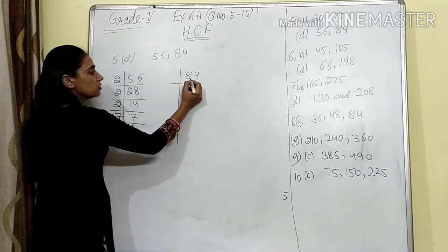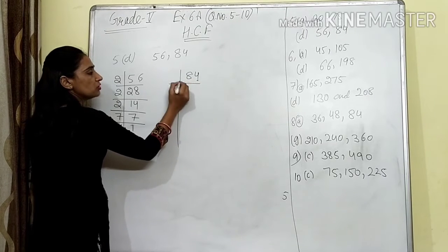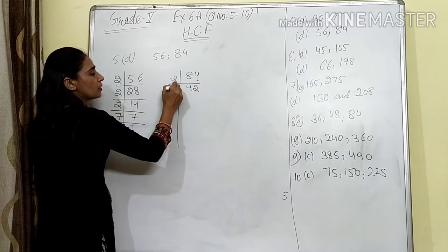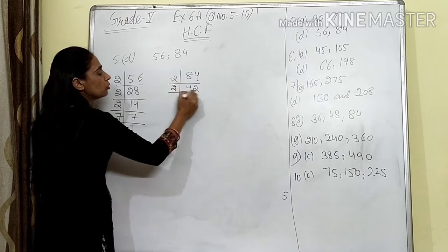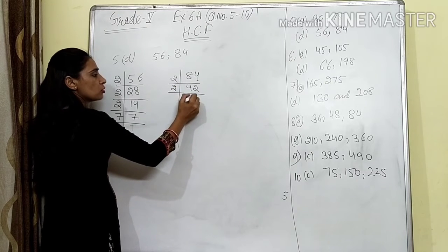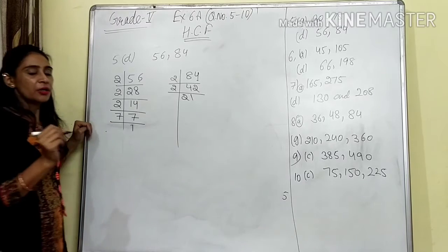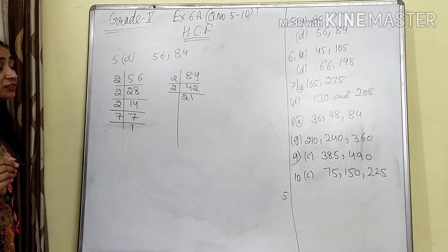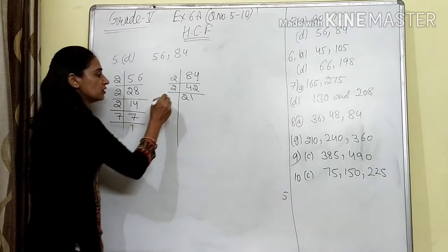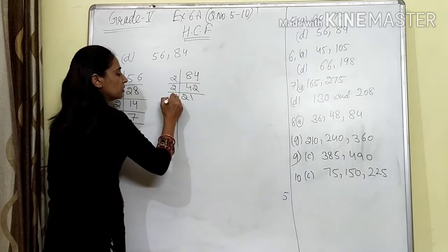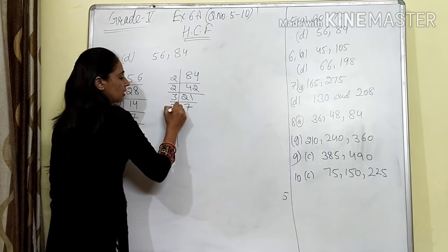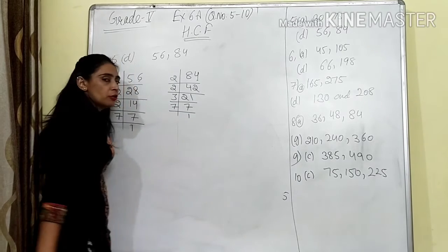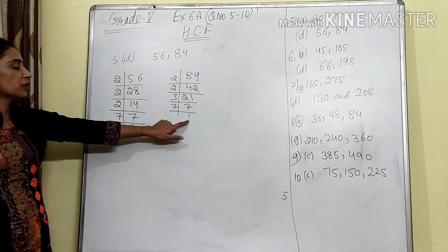7 is a prime number, so we stop at 7 — 7 ones are 7. Now for 84, this is also an even digit, so we divide by 2. We continue dividing by 2. Then 21 is not in the table of 2 because the last digit is odd, so it will be 3 × 7. And 7 ones are 1 — it is also finished. We stop when we get 1.